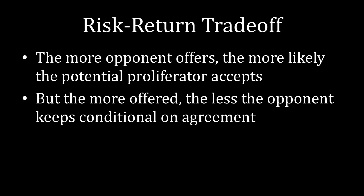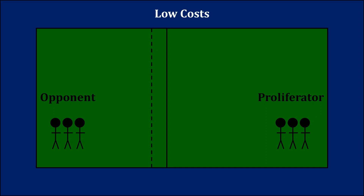Broadly speaking, the more the opponent offers, the more likely the potential proliferator is to accept the offer. To visualize why, imagine that the opponent offers a level of concessions commensurate with a low-cost ability to develop nuclear weapons. This is a generous concession to the potential proliferator. Clearly, a potential proliferator with low costs is willing to accept it, by virtue of the fact that the opponent is designing these concessions for a low-cost potential proliferator. Of course, a potential proliferator with high costs is willing to accept that amount as well, because it would have accepted a much smaller amount, so it's going to be quite excited to receive this larger amount in negotiations.